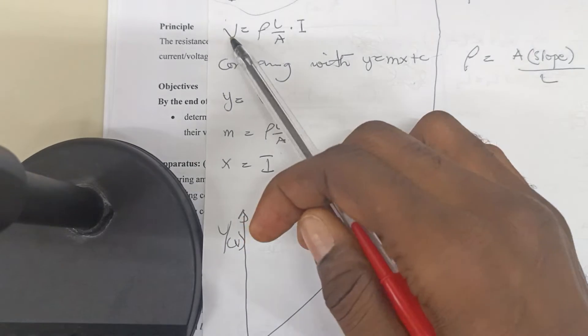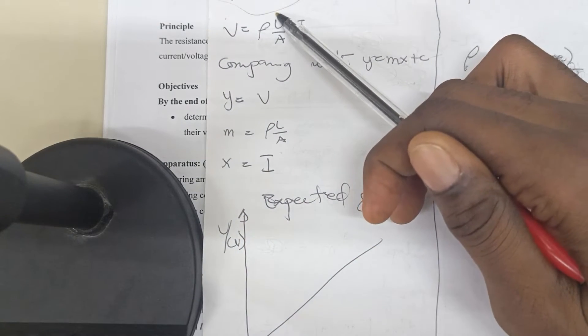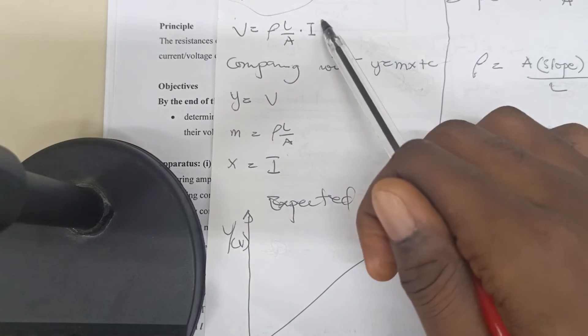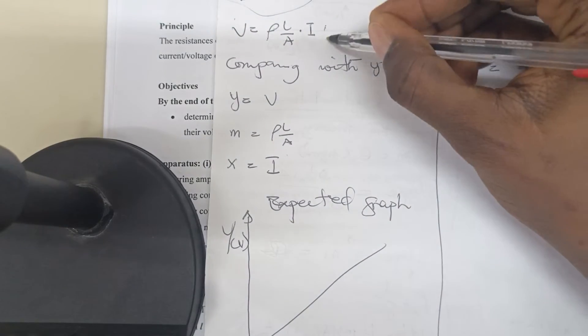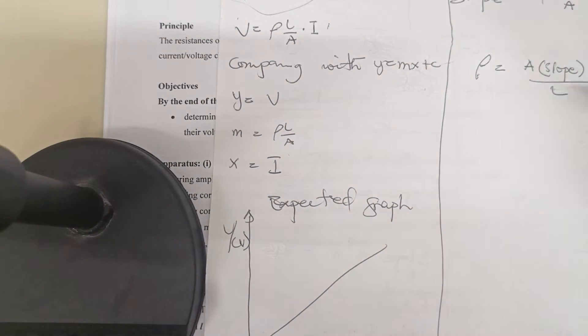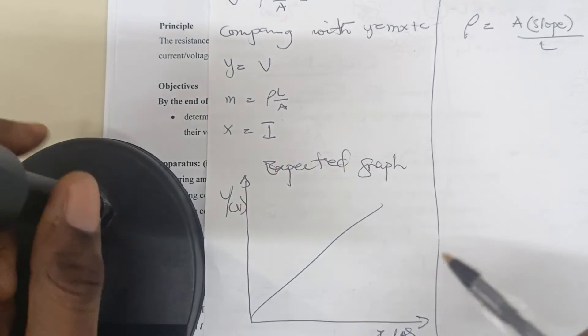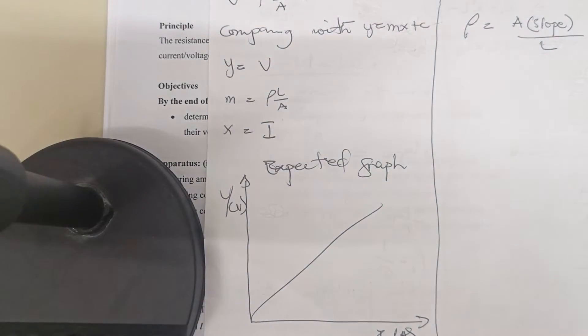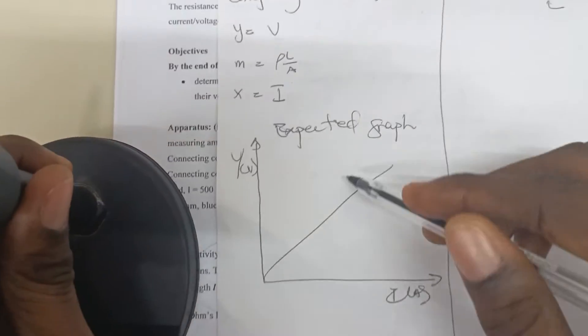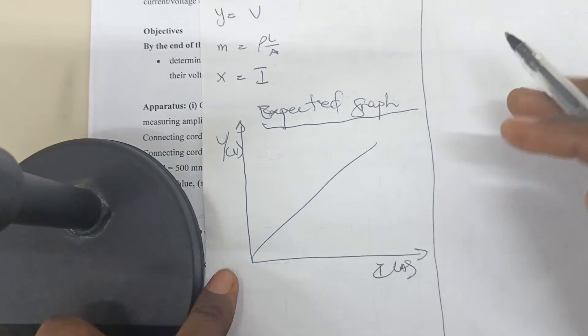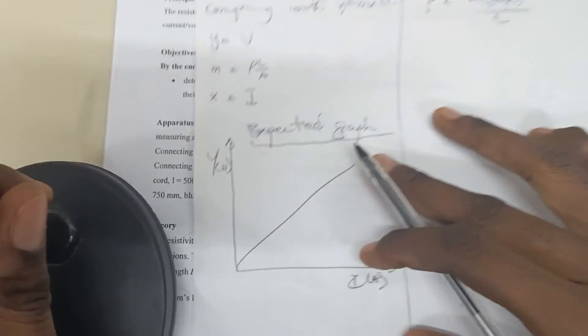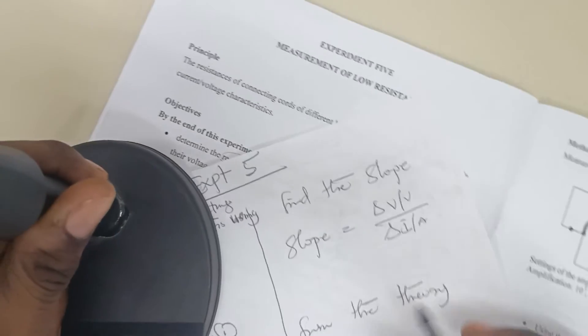As our Y component, this is our M, and then this is our I component. Obviously, this is plus zero. There's no intercept. If there is no intercept, then we have an idea of how the graph will look like. The expected graph should look like this.